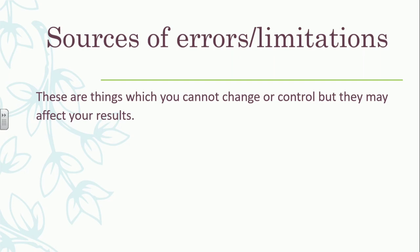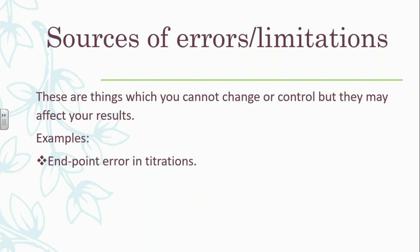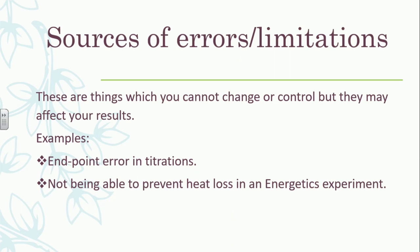For example, in chemistry — mostly for CAPE students — the endpoint error in titrations or volumetric analysis is a limitation intrinsic to the methodology; you can't prevent it. Another example is not being able to prevent heat loss in an energetic experiment. When you add heat to a calorimeter, heat is being lost through the small opening where the thermometer is inserted, and it's very difficult to prevent that. Similarly, if a subject has asthma, that affects their breathing rate and pulse rate, and there's nothing you can do about it.